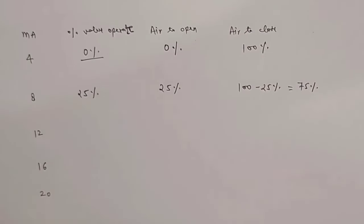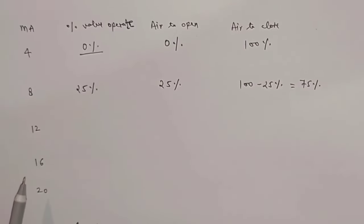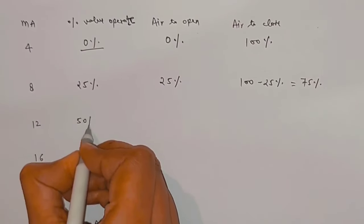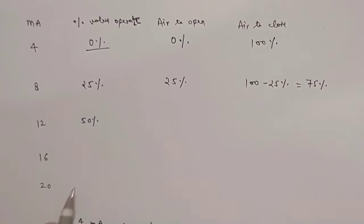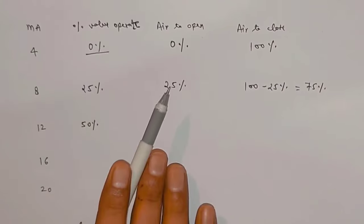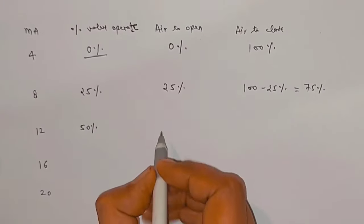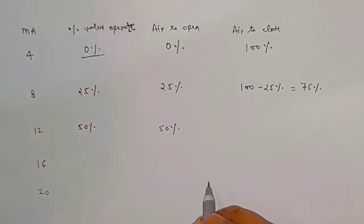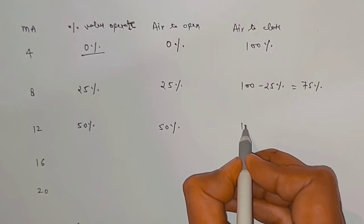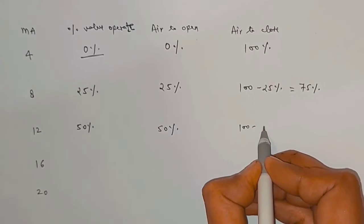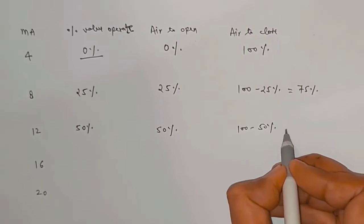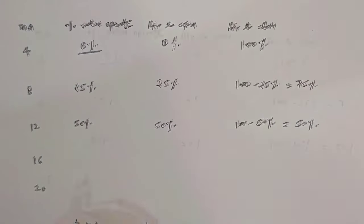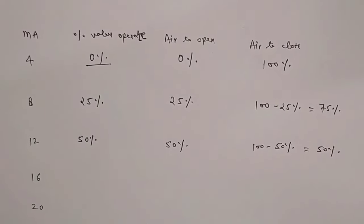At 12 milliampere signal, it will be 50%. So the opening percentage of the air-to-open control valve is 50%. And the opening of the air-to-close control valve will be 100 minus 50%, so it will become 50%.